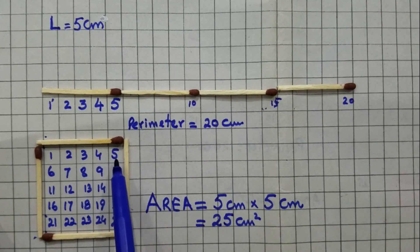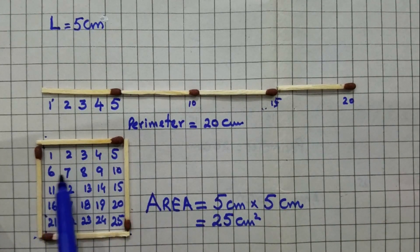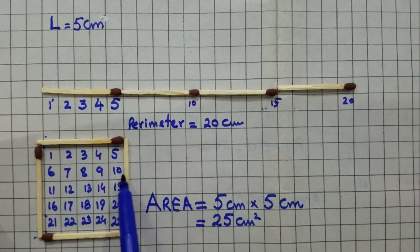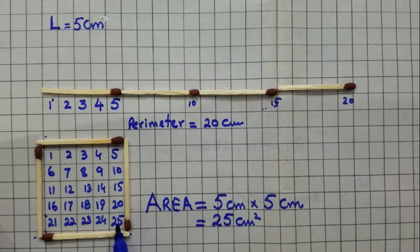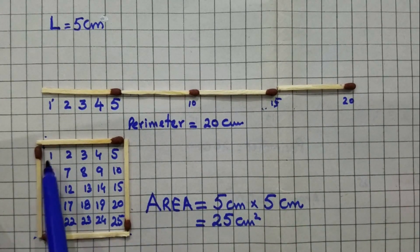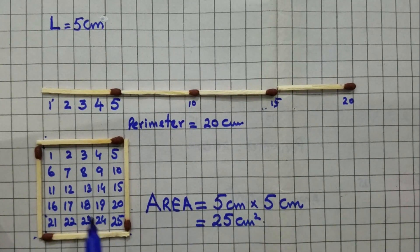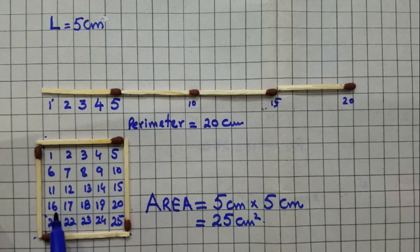Counting the small squares: 1, 2, 3, 4, 5, 6, 7, 8, 9, 10, 11, 12, 13, 14, 15, 16 to 20, 21 to 25. We get 25 squares. We count all the squares.